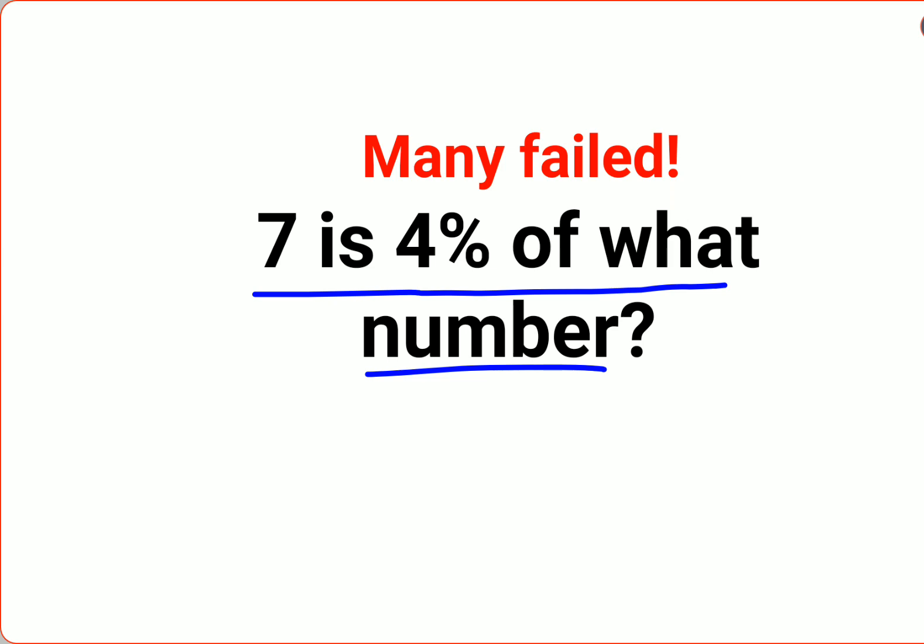So 7 is, means equal to, 4 percent. 4 percent is nothing but 4 upon 100, right? So 4 upon 100 of what? Let's put that number as x.